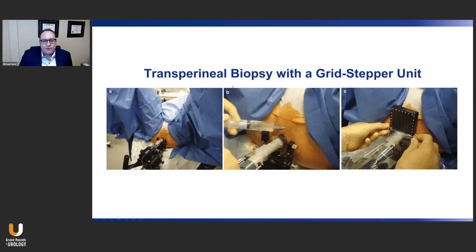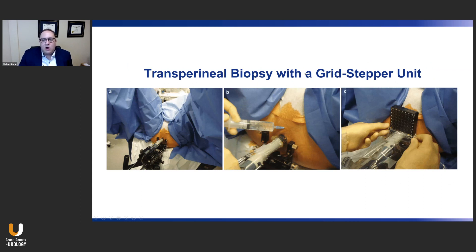So what are the methods for performing transperineal prostate biopsy? The most commonly performed method calls for use of a grid stepper unit — familiar to those who perform brachytherapy, cryoablation, or SPACE OAR. The ultrasound probe is mounted to this mechanical unit, the probe goes in the rectum, and a grid plate is pressed against the perineum. Through the grid holes under ultrasound guidance, biopsy needles traverse the perineal skin. However, a large area of perineal skin must be anesthetized, making this very difficult, and the vast majority of these procedures have been performed under spinal or general anesthesia — a major barrier to uptake.